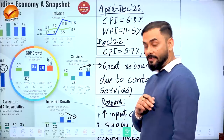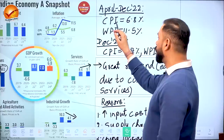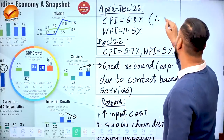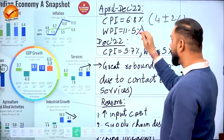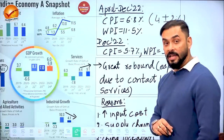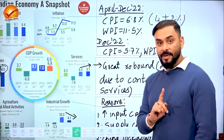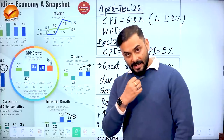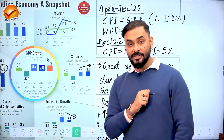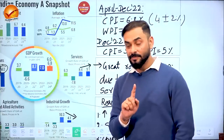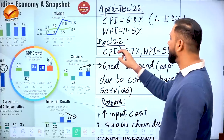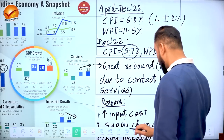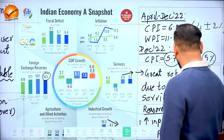Regarding inflation, between April and December 2022, the Consumer Price Index averaged 6.8% — above RBI's tolerance limit of 4±2%. Wholesale Price Index was very high at 11.5%. RBI increased the repo rate, making loans costly and reducing cash in circulation. The government also reduced excise and custom duties. Because of these steps, CPI came down to 5.7% and WPI to 5% by December 2022.